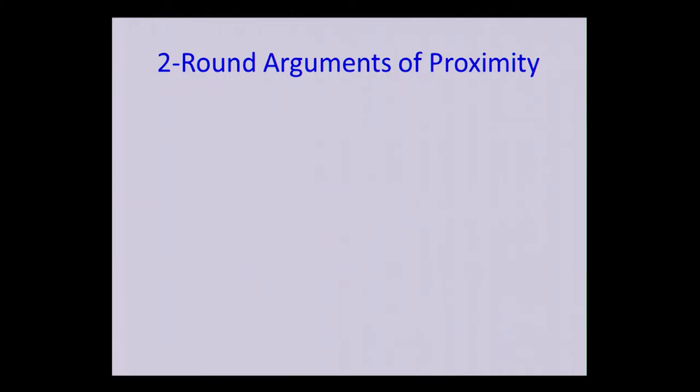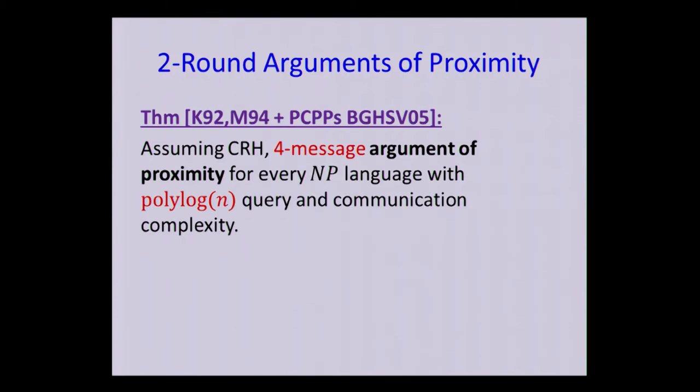And it actually turns out that these are fairly easy to build if you allow a little bit of interaction. So by looking at this classical result of Kilian and followed up by Micali, they have a result of a classical argument with linear time verification. And it's based on PCPs together with collision-resistant hashing. And it turns out that there's a notion of a PCP of proximity. And if you use... Which was constructed in a work by Ben-Sasson et al. 10 years ago, I guess.